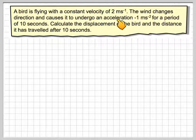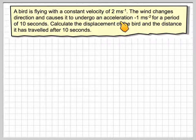A bird is flying at a constant velocity of 2 metres per second. The wind changes direction and it undergoes an acceleration of minus 1 metres per second squared for a period of 10 seconds.